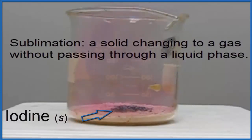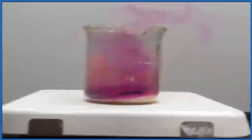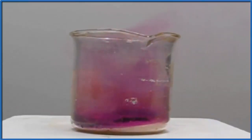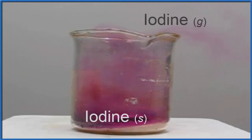So we put solid iodine in a beaker, and we have hot sand there, and immediately it starts to change from a solid directly to a gas. And it doesn't change into a liquid, it's just solid to gas. That's sublimation.